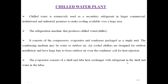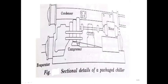The evaporator consists of a shell and tube heat exchanger with refrigerant in the shell and water in the tubes. The figure shows the condenser, the compressor motor — this is the motor for energy transfer — for evaporating. This is one packaged chilled water plant.